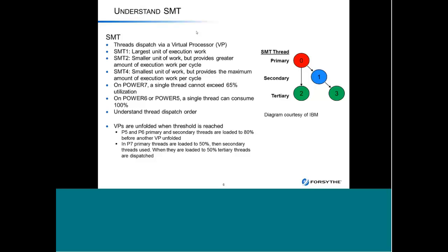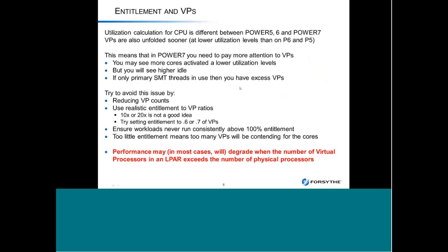Virtual processors can get unfolded faster in Power 7 because it tries to do primaries and secondaries across the board before going back to tertiaries. If you overcommitted virtual processors in the past, on Power 6 it didn't matter because they weren't unfolded as quickly. But in Power 7, you may be unfolding virtual processors when tertiary threads are still available, meaning you can't take advantage of proper SMT4. Rosa Davidson had a Back to Basics presentation in Las Vegas, and Stephen Nisipany also talked about this at great length. Customers thought they were using more cores, but when they looked back they actually had more idle time.